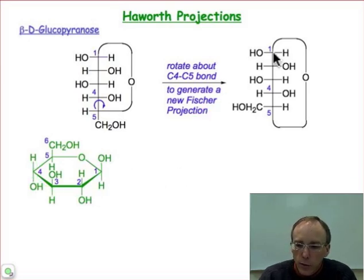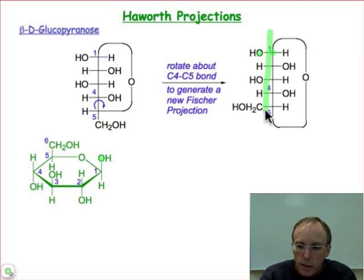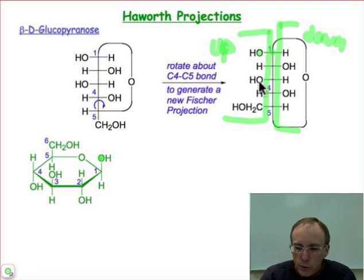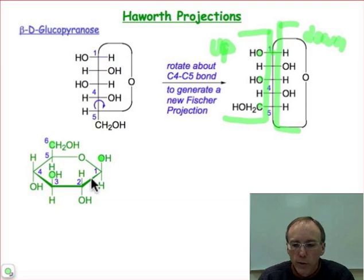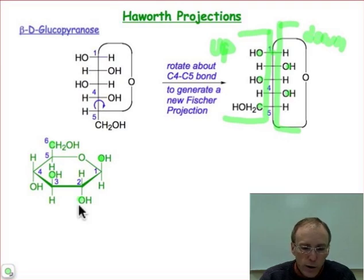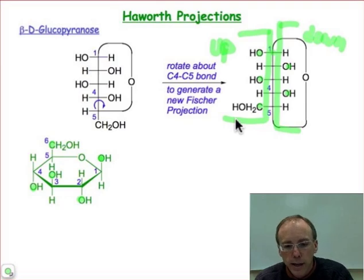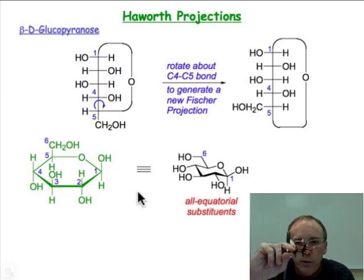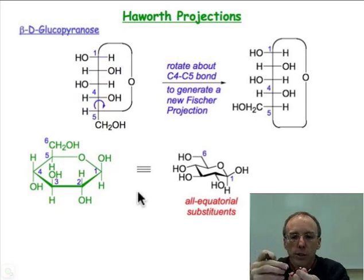We can transform the Fischer projection into the Haworth projection directly. Everything on the left-hand side of the Fischer projection goes up above the plane, and everything on the right-hand side goes down. So the hydroxyl group at carbon 1 is up, the hydroxyl group at carbon 3 is up, and the CH2OH group from carbon 5 is also up. Everything on the right side — hydroxyl at carbon 2 and hydroxyl at carbon 4 — are down. Right-hand side down, left-hand side up in the Haworth projection.